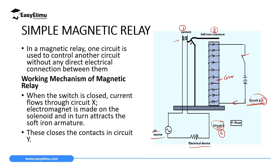If we use Fleming's right-hand grip rule to determine the polarities, we grasp with our right hand so that the fingers point in the direction of current, and the thumb will point in the direction of the north pole. In this case, if I grasp, my fingers will be pointing toward the right side of the screen. The upper part will gain a north pole and the lower part will gain a south pole. After the core gains magnetism, it is going to attract the soft iron armature.